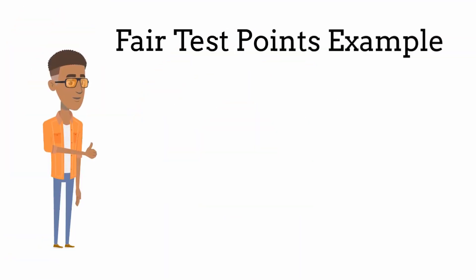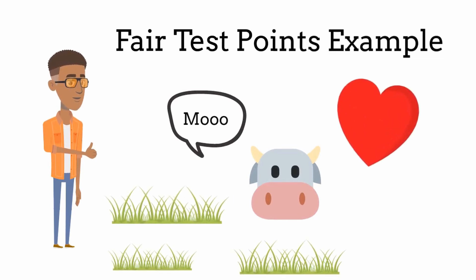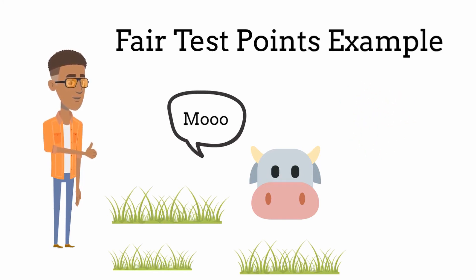When you carry out a practical or test, you are often trying to measure one thing, and everything else is the same. For the sake of explanation, let's say that one thing involves a cow, and we are trying to find if the amount of grass the cow eats will affect the happiness of the cow. We carry out a practical and feed a cow different amounts of grass. However, when we look back at the results, we find that the cow is unhappy when allowed to eat all the grass it wants, and happy when given very little. That means something external must be affecting the results — another variable was affecting the outcome.